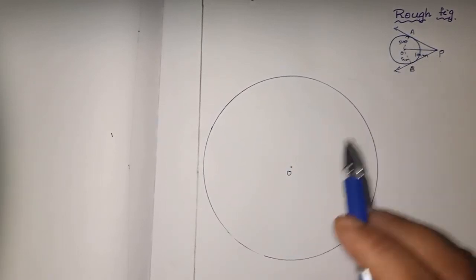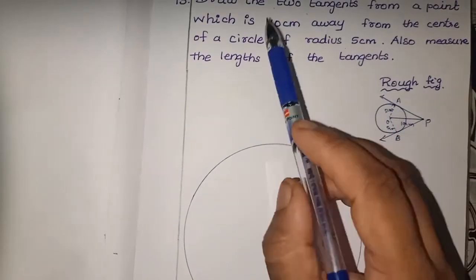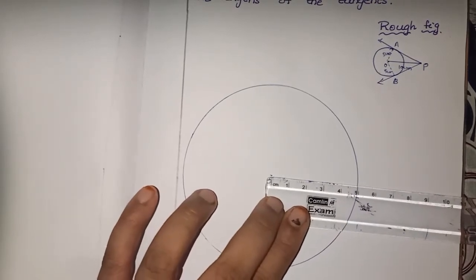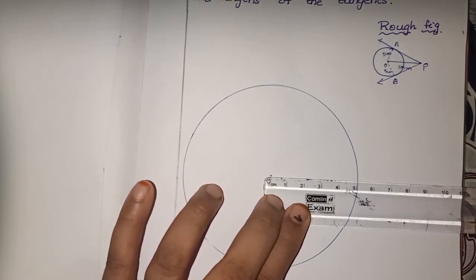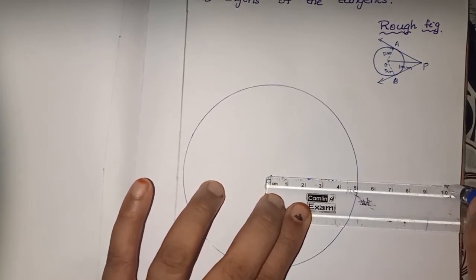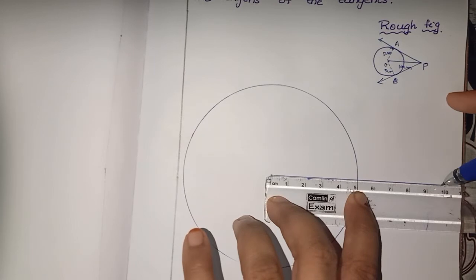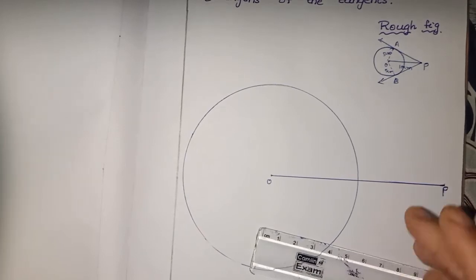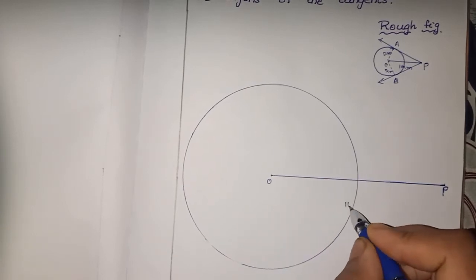See the rough figure. Two tangents from an external point. How much cm away from the center? The external point is 10 cm from center. Scale is straight. From center length, 10 cm you have to measure. Measure 10 cm. So, the central length is 10 cm. In the right hand, the point is placed. This is our point P - the external point. O to P is actually 10 cm.